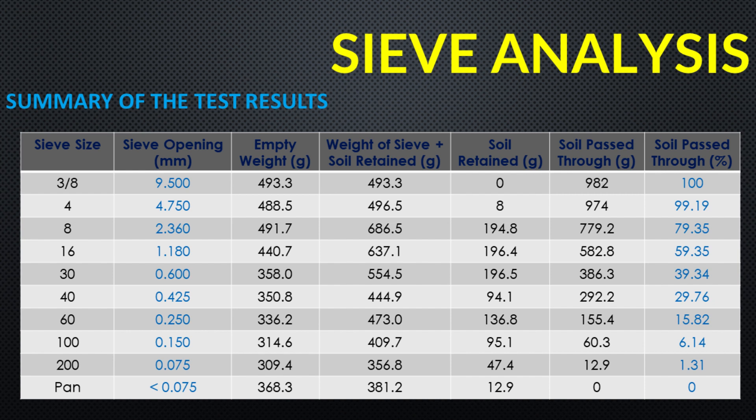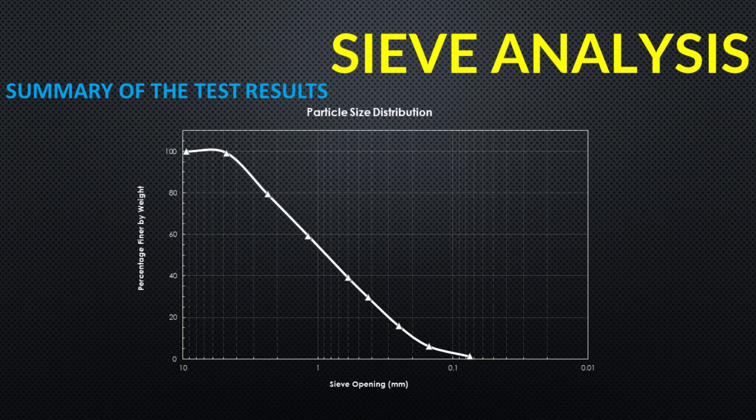Plotting the particle size distribution curve: create a particle size distribution curve by plotting the sieve size on the x-axis and the cumulative percentage passing on the y-axis.